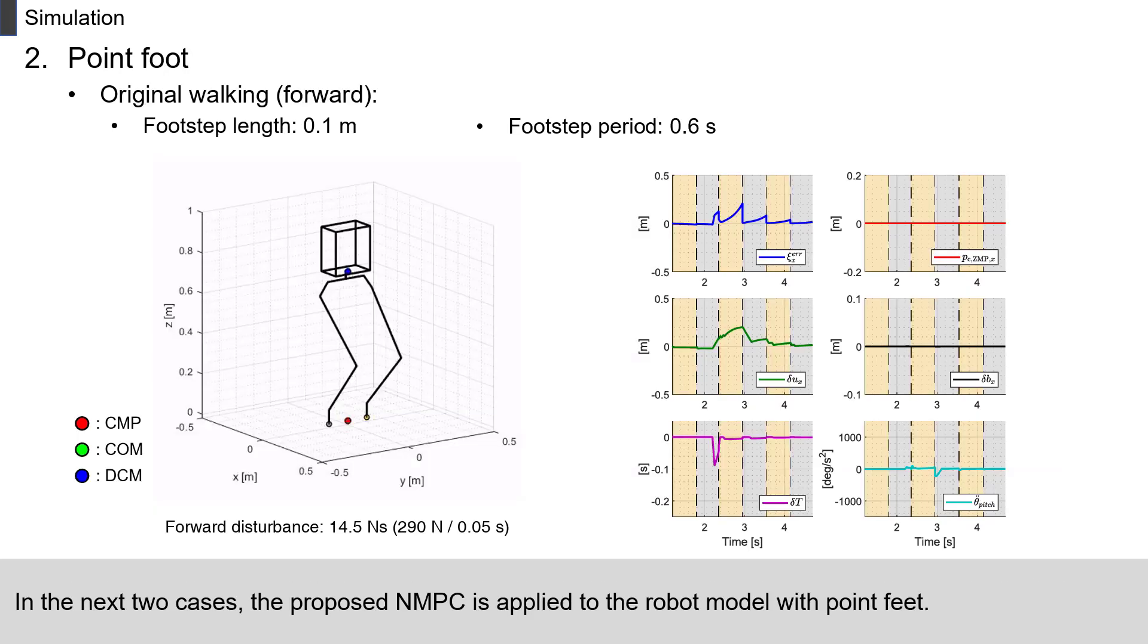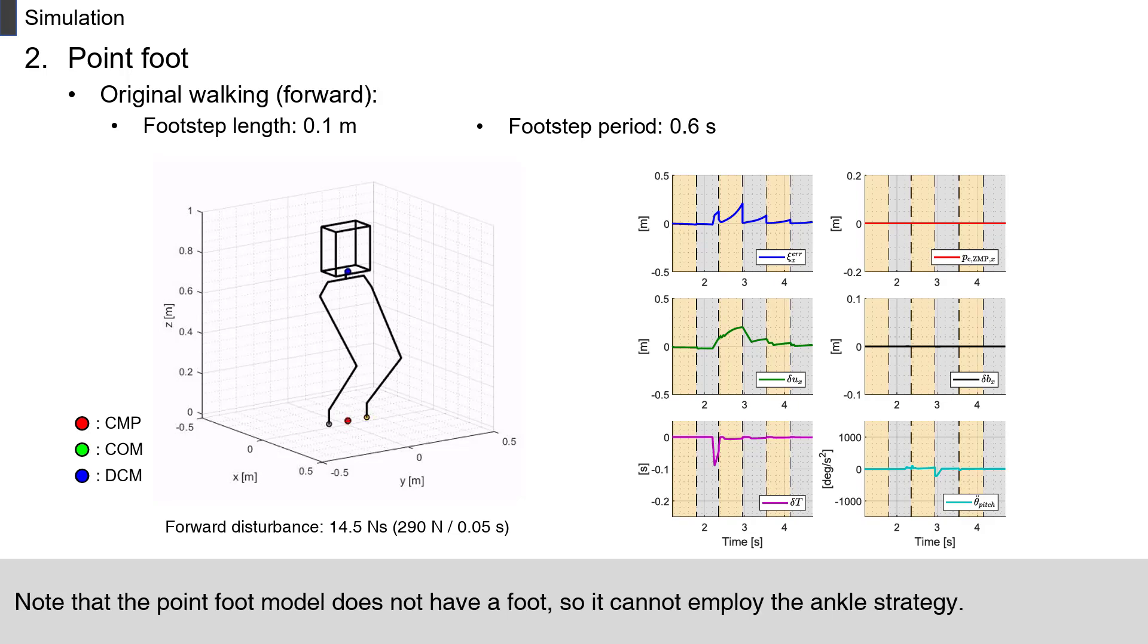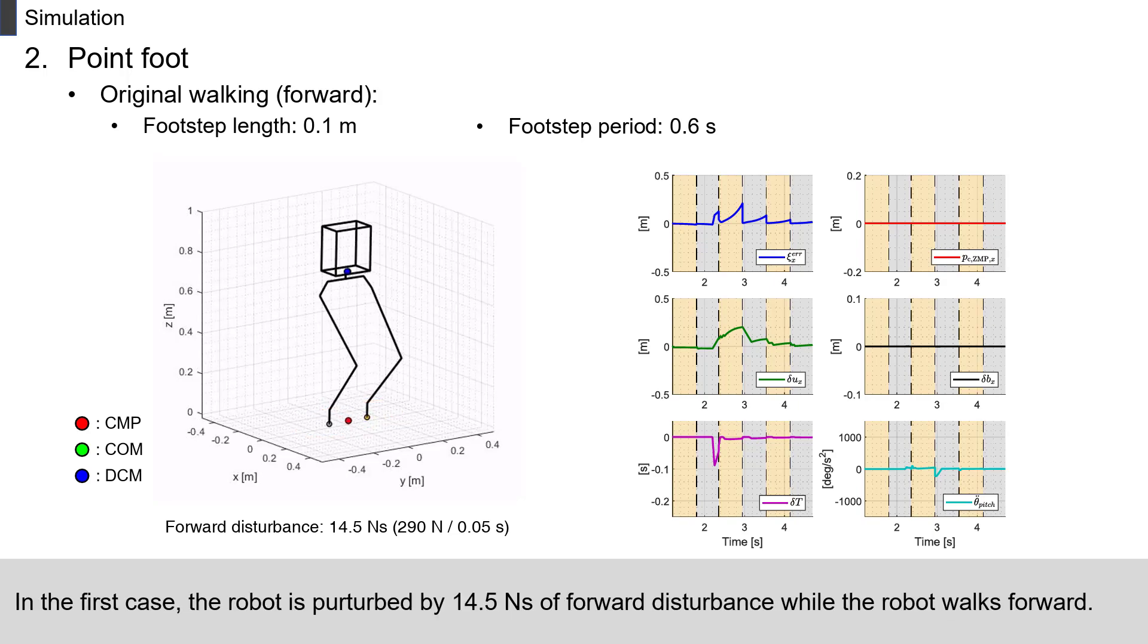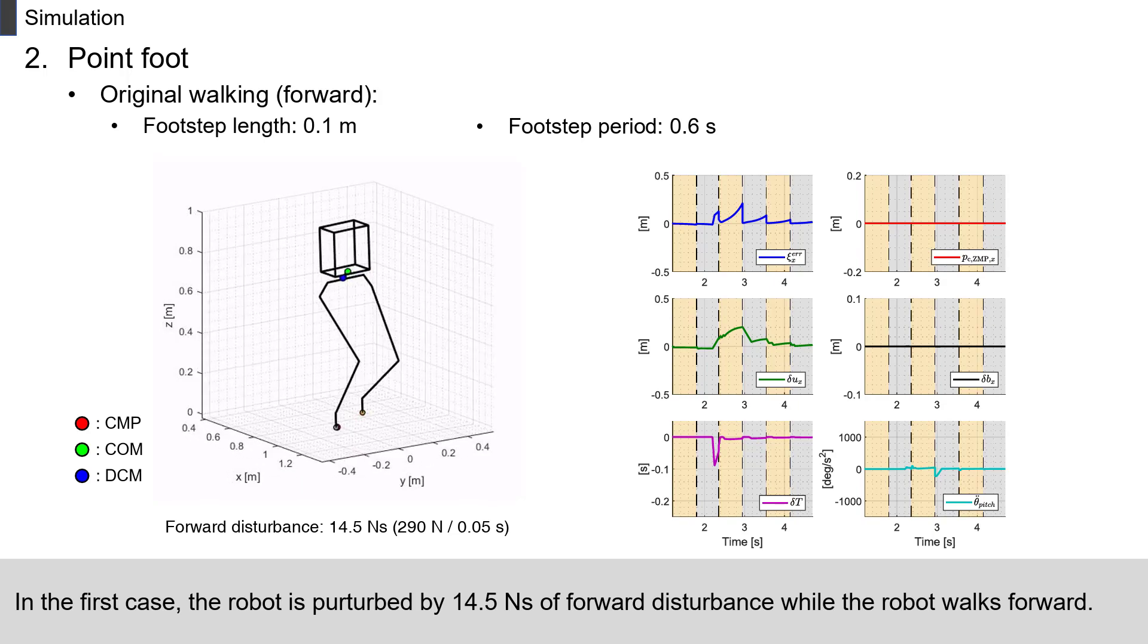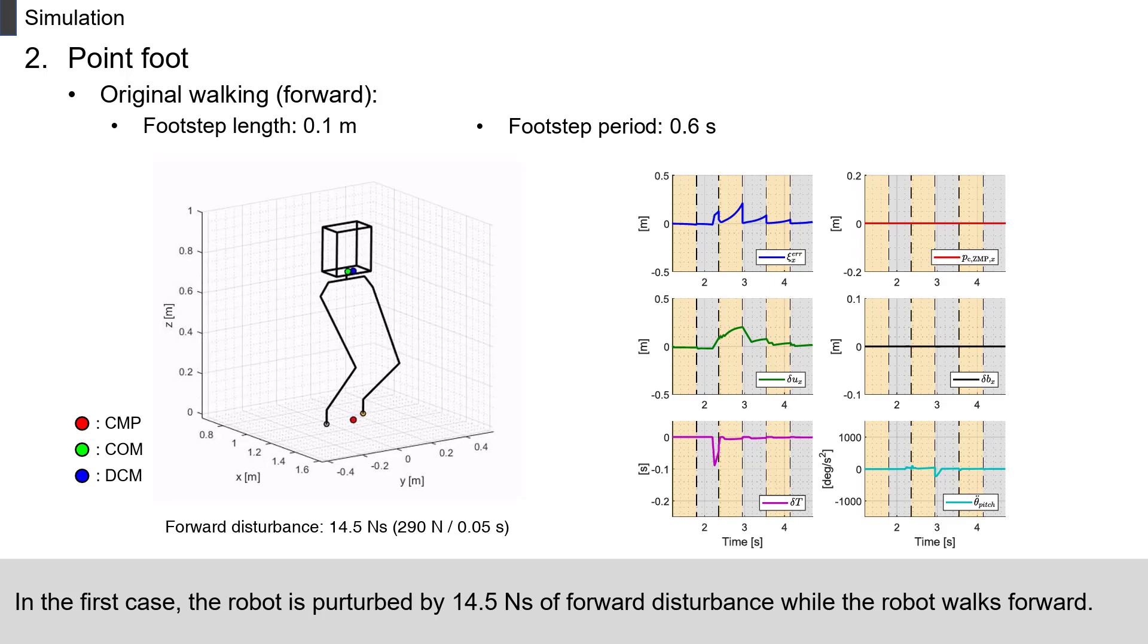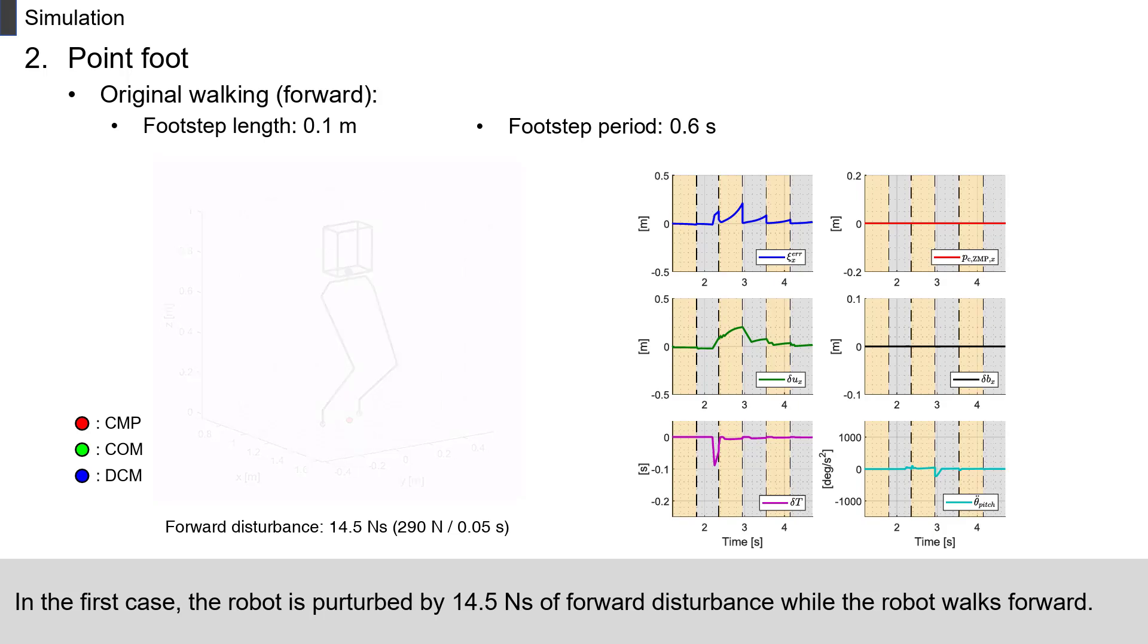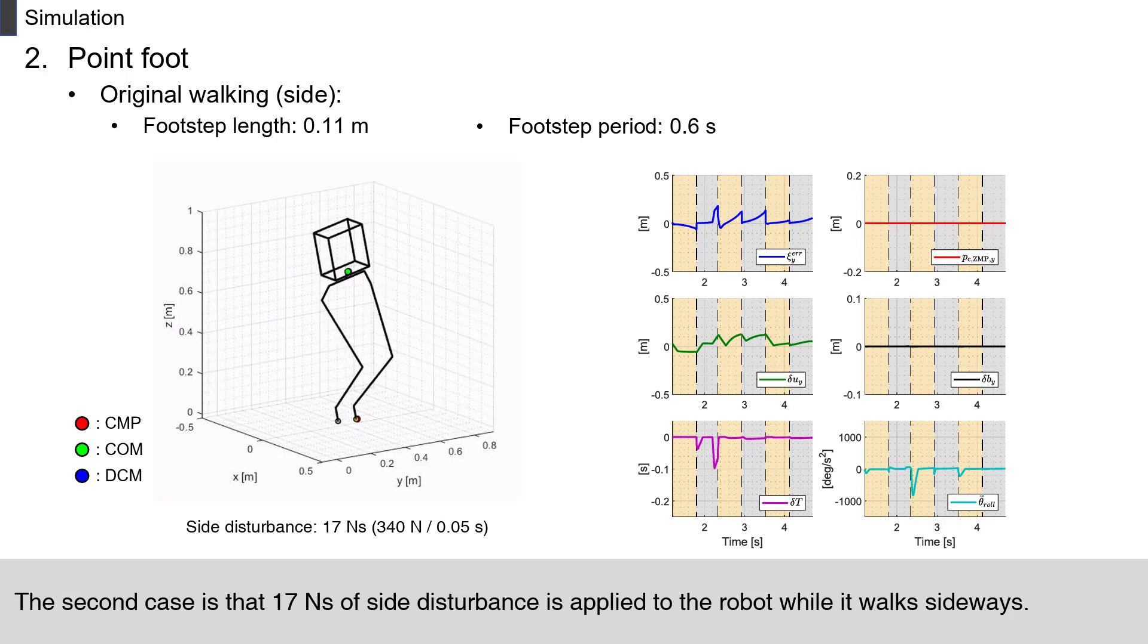In the next two cases, the proposed NMPC is applied to the robot model with point feet. Note that the point foot model does not have a foot, so it cannot employ the ankle strategy. In the first case, the robot is perturbed by 14.5 Nm second of forward disturbance while the robot walks forward. The second case is that 17 Nm second of side disturbance is applied to the robot while it walks sideways.